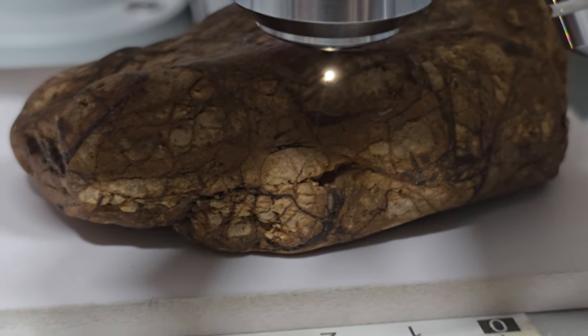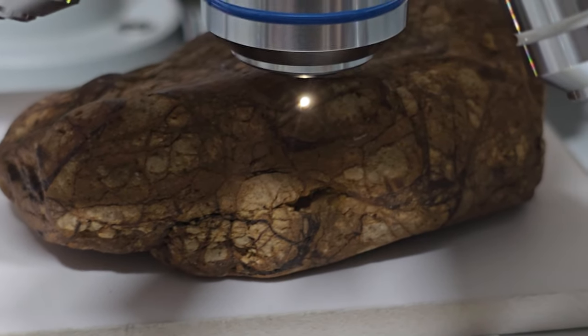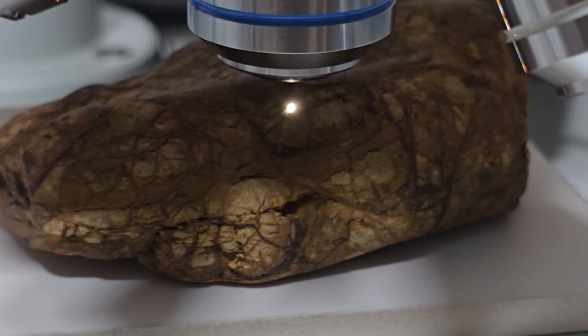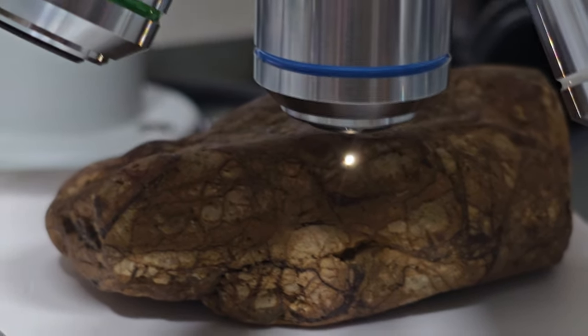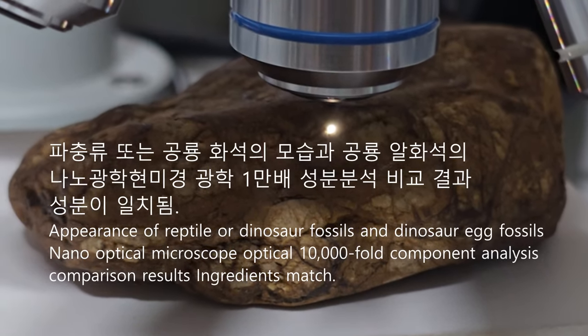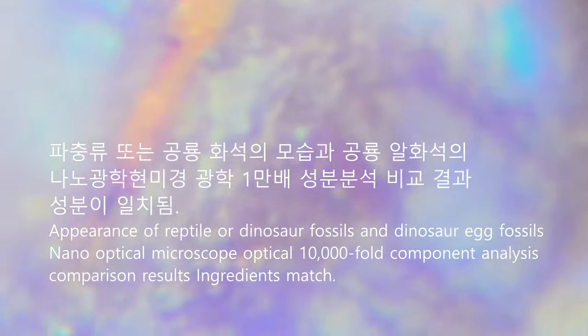지금 보고 계시는 파충류 공룡화석을 디테일이 보이시죠. 보통 파충류의 모습을 그대로 볼 수 있는데 이빨의 끝까지의 모습입니다. 이 공룡돌화석의 모습을 보고 유사점을 찾는데, 지금 광학 만배에서 아주 세부조직의 입자들의 모습을 보면, 이 하석과 아까 모습하고 일치가 되네요.